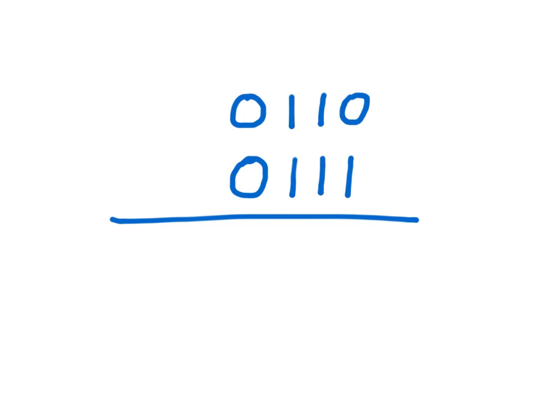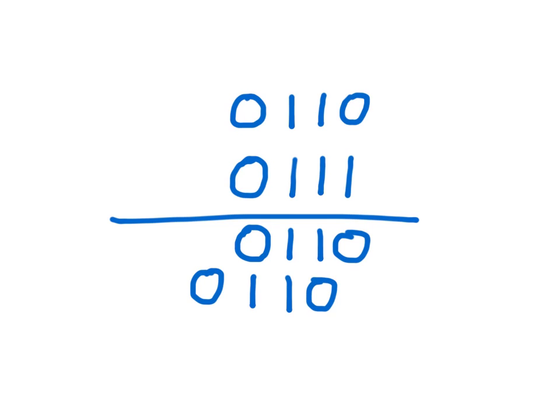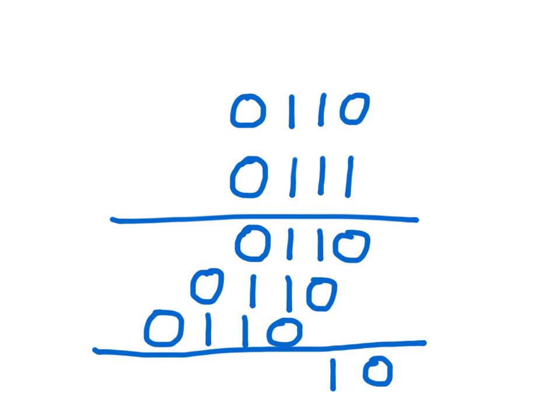Let me show you one more example. We're going to say seven times six. If we have a one, it's just going to be whatever is on the top — we literally write down the number on top because one times zero, one, one, zero is zero, one, one, zero. Now we have another one, so we do exactly the same thing but move over one place. Then we have another one, so we do the exact same thing and move over one more. Now we add it all up. Since we have two ones here, we carry a one and drop down a zero. Now we have three ones, carry a one, drop down a one, two ones — and we have our answer.